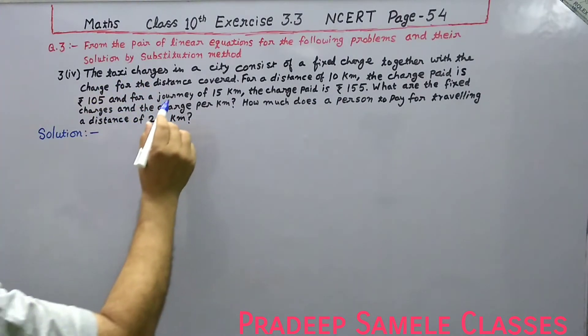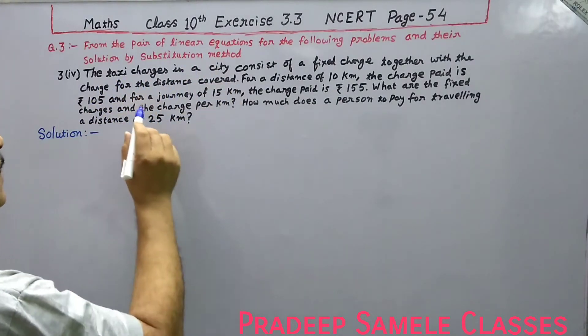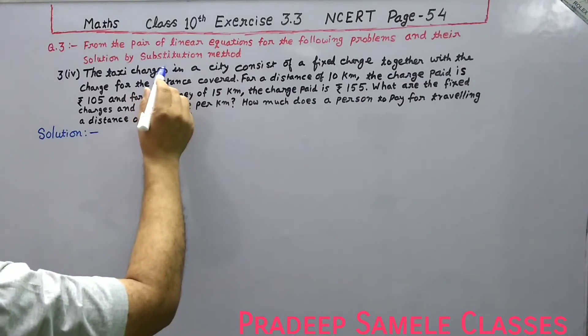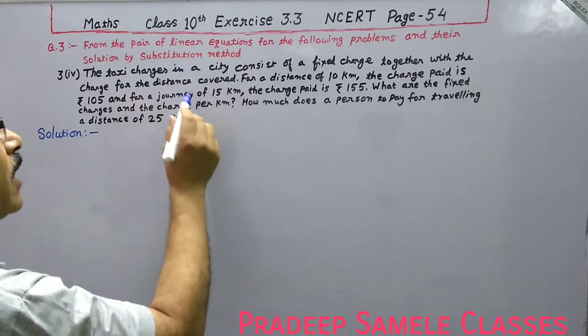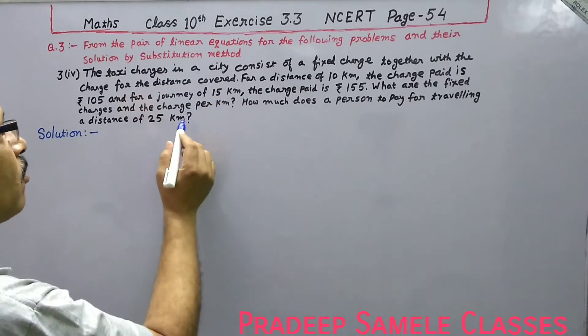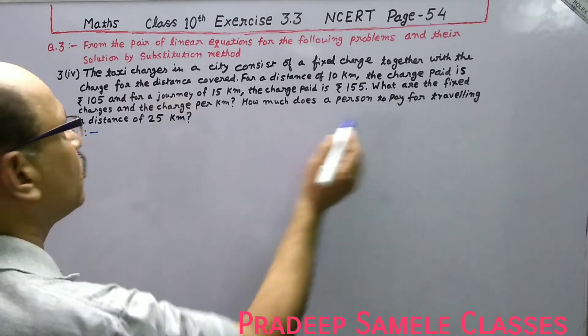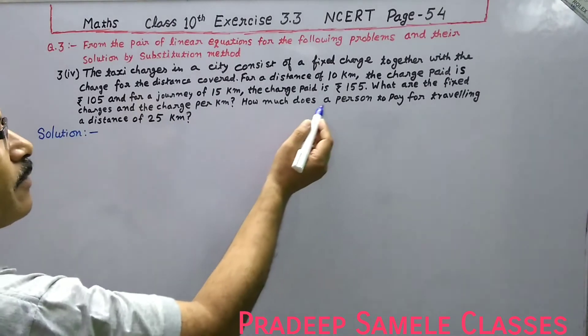This is the first part of the word problem — we need to form a linear equation. After that we will find the value for 25 km and determine how much a person pays for that distance.